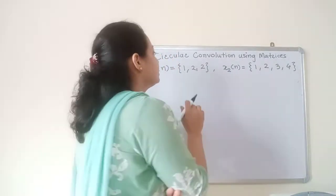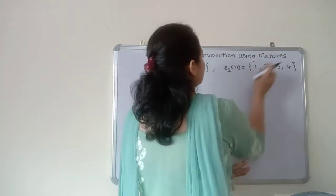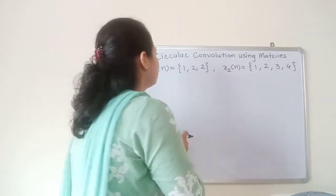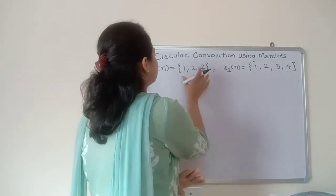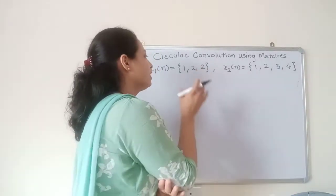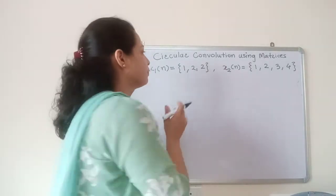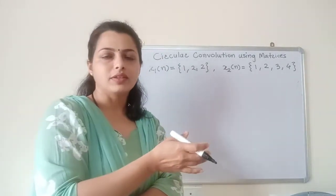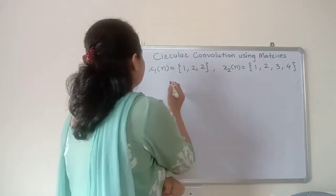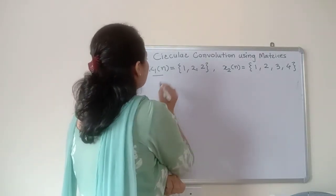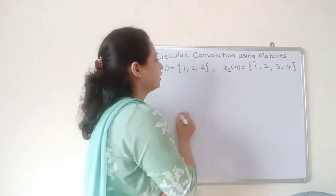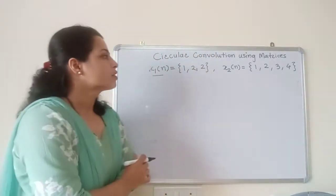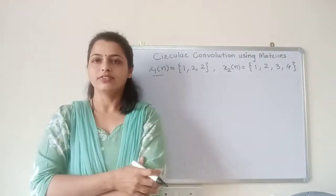In this method using matrices, we form a circulant matrix and the other sequence that is given we write in column form. Before going to the procedure, we will see that the length of x1 of n is 3 and the length of x2 of n is equal to 4. So we have to match the length first.